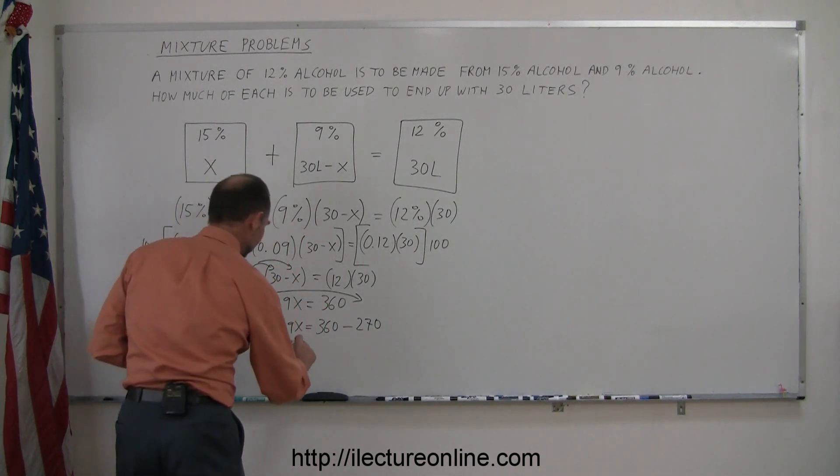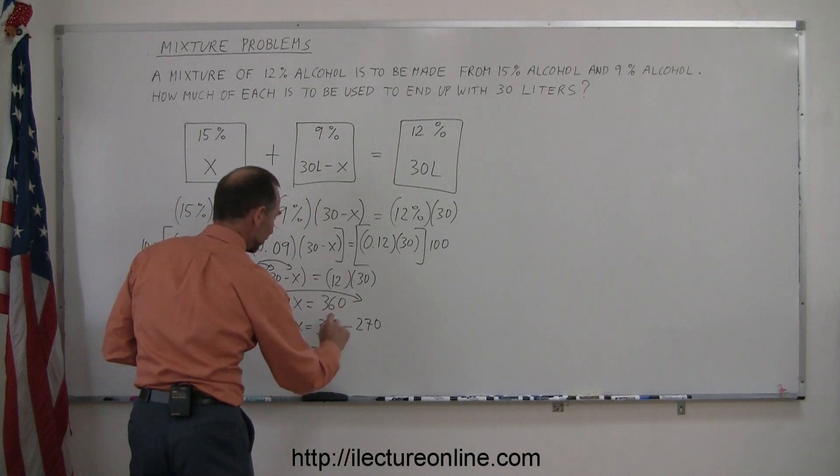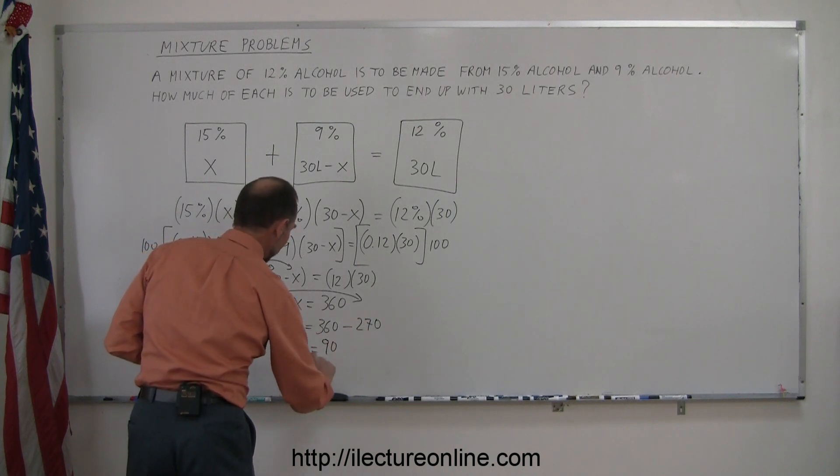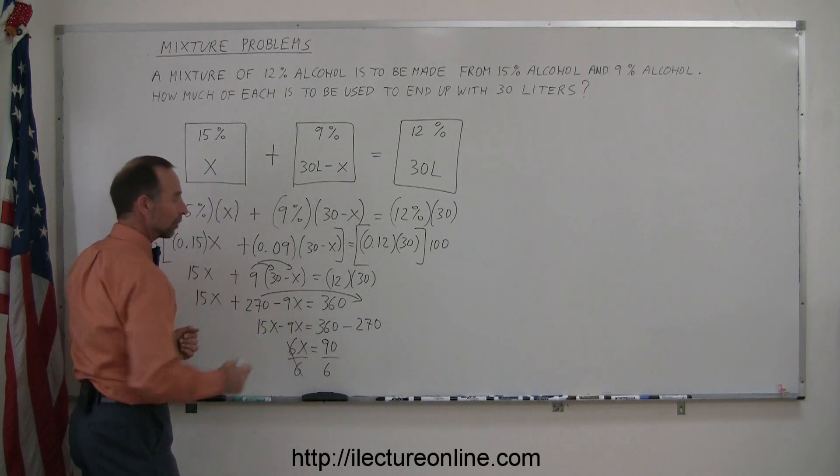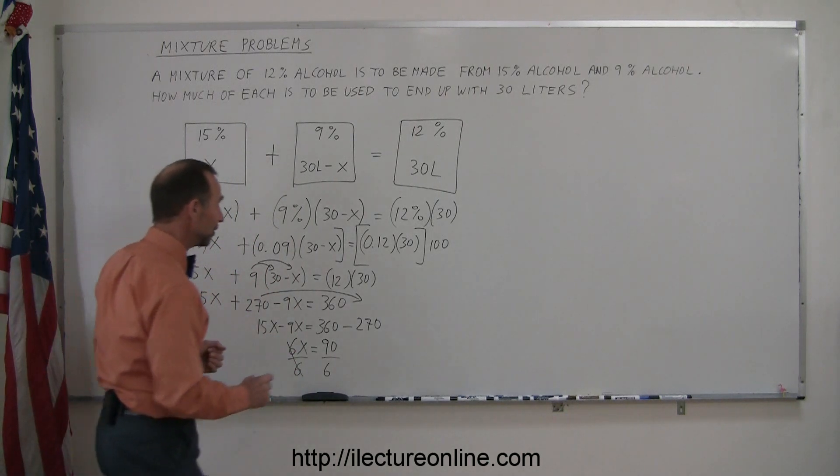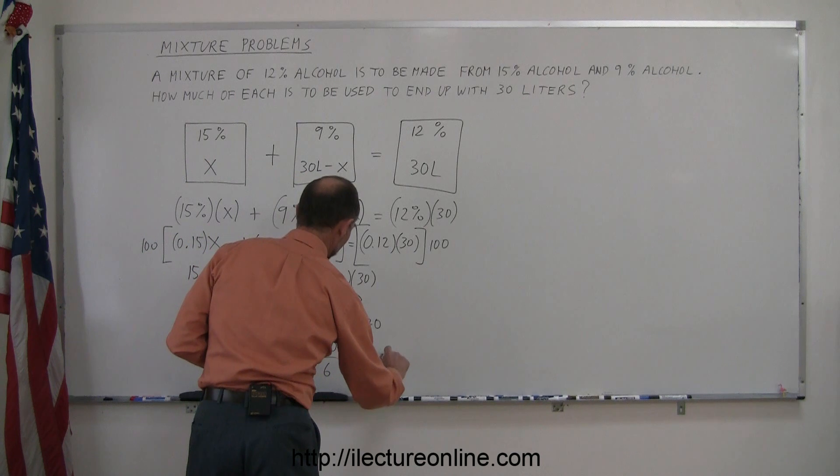15X minus 9X is 6X. 360 minus 270 is 90. Divide both sides by the coefficient in front of the X. So we get X equals 90 divided by 6, which is 15. X equals 15.